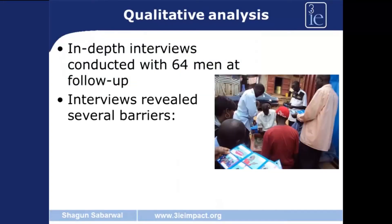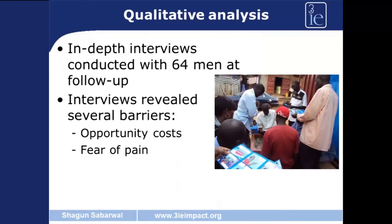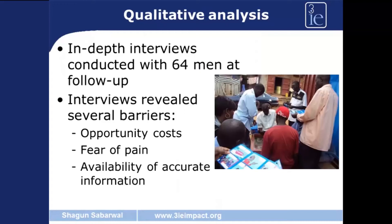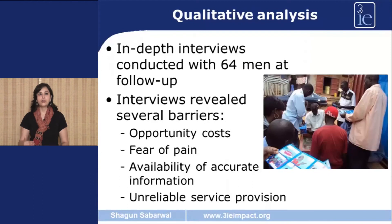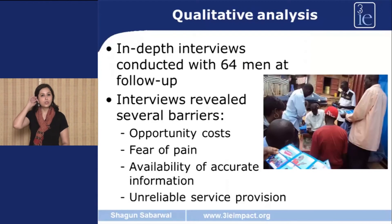The interviews revealed several interesting findings. The first was opportunity costs — if you go and get a circumcision procedure done, you are not able to go to work for one week, which is a huge cost especially for men who are the sole earners in their family. Another important finding was that fear of the procedure is a huge barrier. The third important point was availability of accurate information — even if a person decides to go for the procedure, if they talk to friends, there are many rumours floating around which then scares them from proceeding. And finally, there was unreliability of service provision, meaning individuals who took up circumcision had to go multiple times to the clinic to get the procedure done.